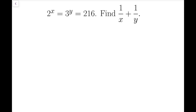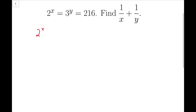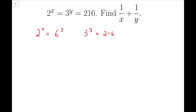We can take from this equation that 2 to the power of x equals 216, and at the same time, 3 to the y equals 216. Notice that this number, 216, is actually exactly 6 cubed. So now we have two equations that involve powers.